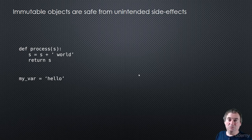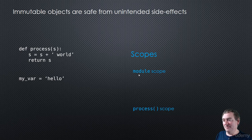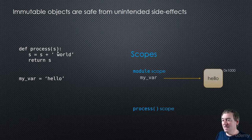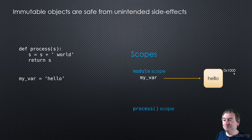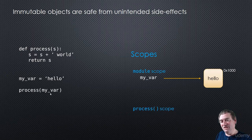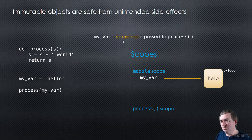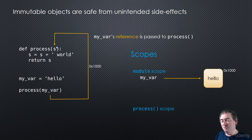Let's say we have this function called process and it takes in a parameter s, and it's going to modify that parameter by concatenating world onto it. So in our main code we define myvar and set it equal to the string hello. We have two scopes: the scope of our module and the scope of the process function. When we run myvar equals hello, the module scope has a variable myvar pointing to some object in memory at memory address 1000. When we call process with myvar, myvar's reference — 1000 in this case — is passed into process.